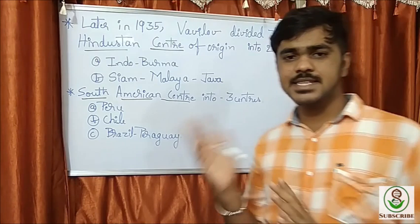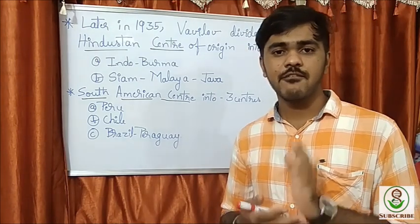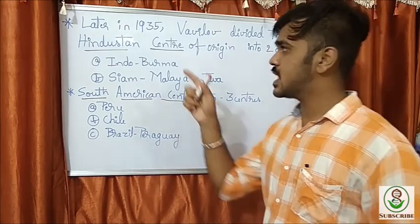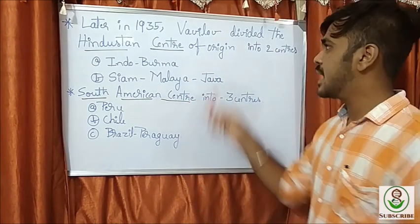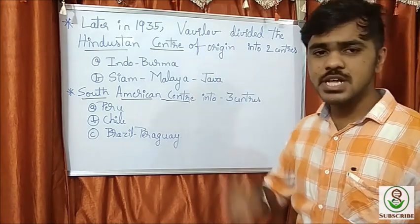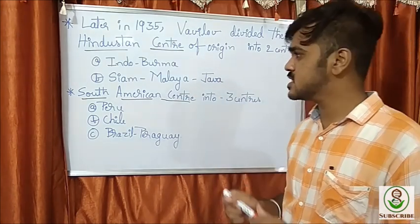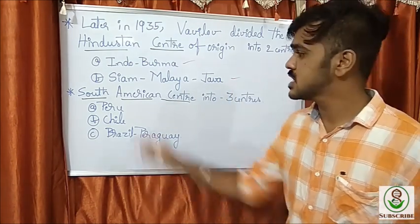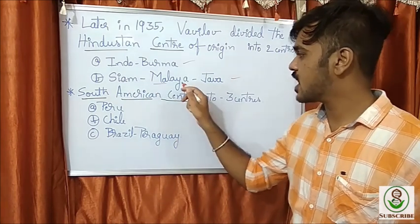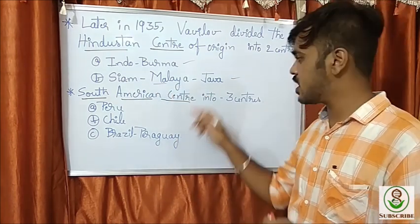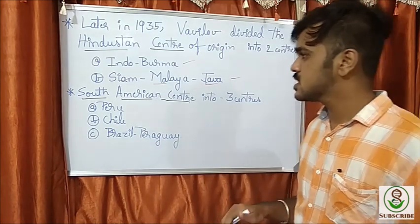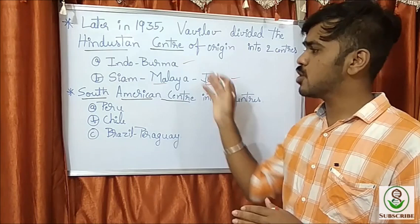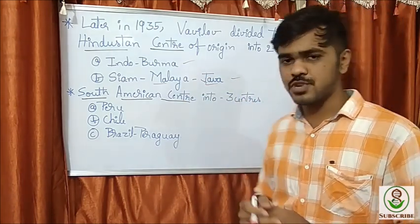Now we know all eight centers of origin given by Vavilov. Later, in 1935, Vavilov divided the Hindustan center of origin into two subcenters: the Indo-Burma center of origin and the Siam-Malaya-Java center of origin. Siam corresponds to Thailand, and Malaya is near Indonesia, which is an island within that region.